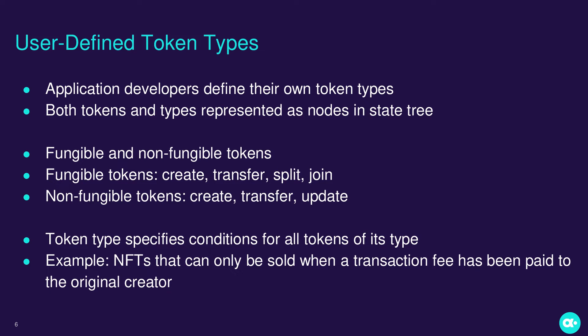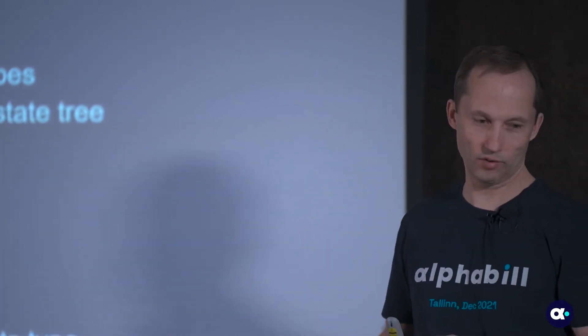One NFT of a type is distinct from another — like a piece of art. Each token refers to its type by the node identifier of the type. Standard operations for fungible tokens: they can be created, transferred, split — you can take a larger bill and split into two smaller ones — and joined. Non-fungible tokens can be created and transferred but cannot be split or joined, because joining two things with distinct identities raises the question of what the identity of the new thing would be.